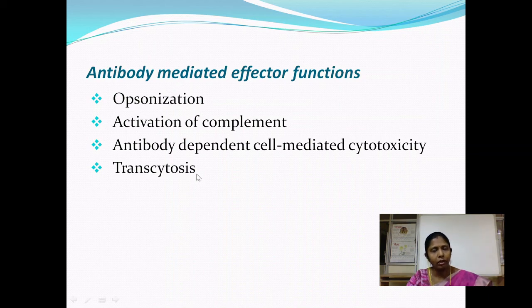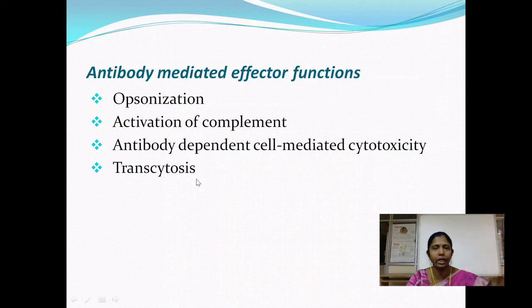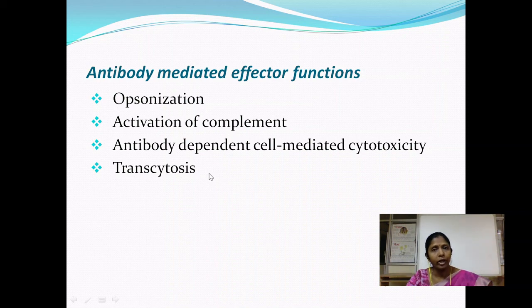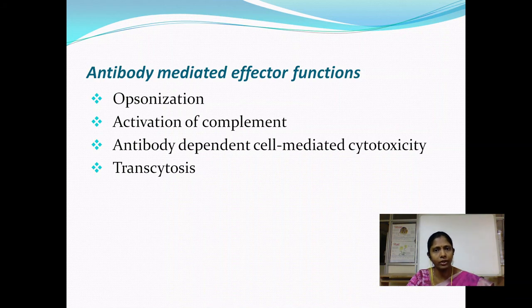Transcytosis — the transport of antibody molecules across epithelial membranes and mucosal surfaces — is facilitated by the constant region or crystallizable fragment. Transcytosis is very important in protecting mucosal surfaces such as the retina, nasal lining, and buccal cavity, which are points of entry for pathogens. It also helps antibodies reach the newborn baby or infant through the mother's breast milk, providing the infant with protection from external infectious agents.